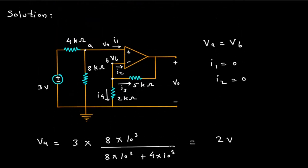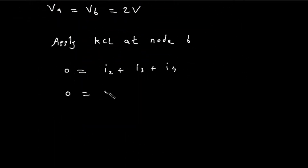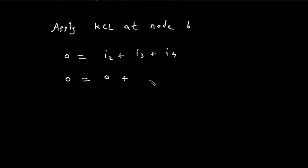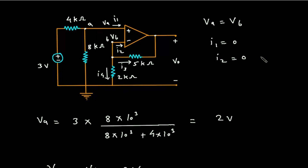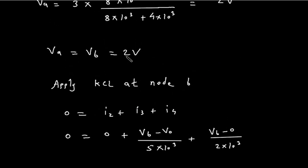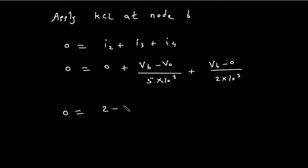Since I2 = 0 for an ideal op-amp, the KCL equation becomes: 0 = I3 + I4. I3 is equal to (VB − VO) / 5kΩ, and I4 is equal to VB / 2kΩ. Substituting VB = 2V: 0 = (2 − VO) / (5×10³) + 2 / (2×10³).